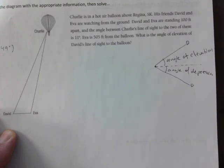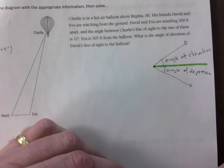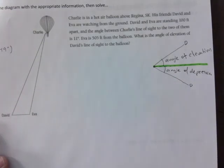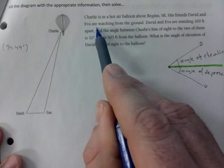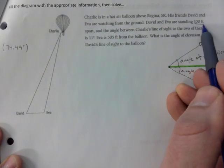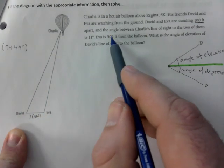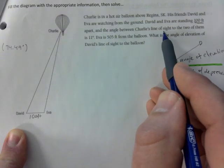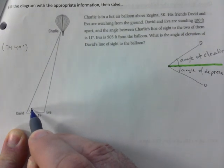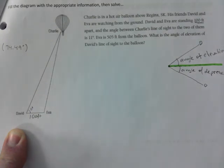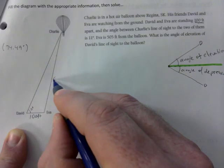If you were to look down, the angle of depression is here. There's always the horizontal, this is very important, and to not mistake that there has to be a horizontal in the mix. So it says that there's a hot air balloon, David and Eva are watching from the ground and they're standing 100 feet apart. The angle between Charlie's line of sight to the two of them is 11 degrees.